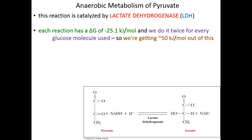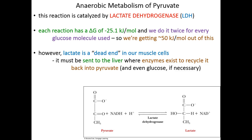Each of these reactions has a delta G of negative 25.1 kilojoules per mole. Since we've made two pyruvates per one molecule of glucose, we can do this reaction twice per consumed glucose molecule, generating about 50 kilojoules per mole anaerobically — not bad, especially in the absence of oxygen. However, lactate is not a dead end in our muscle cells. Lactate is the conjugate base of lactic acid, and muscle cramps are due to lactic acid buildup. Muscle cells can send that lactate to the liver, where liver enzymes can recycle it back into pyruvate and even back into glucose through a process called gluconeogenesis.